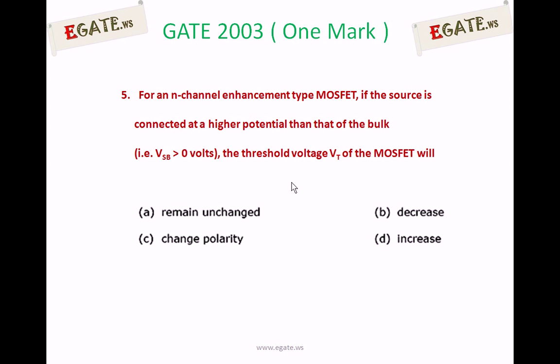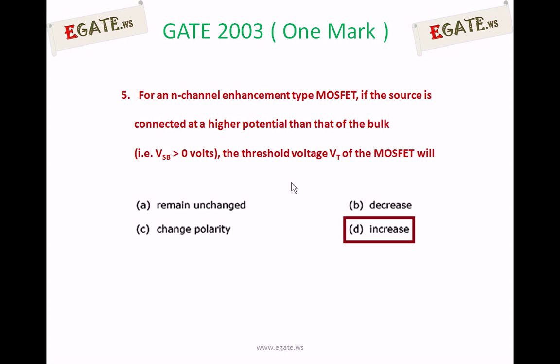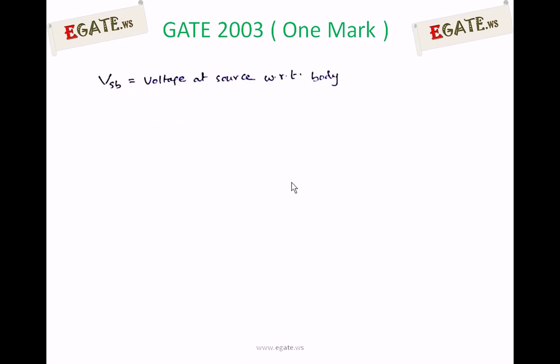The correct answer for the question is increases. For an n-channel enhancement type MOSFET, if the source is connected at higher potential than that of bulk, then the threshold voltage has to be more. We see the details. VSB is voltage at source with respect to body. Body is also called bulk or substrate.